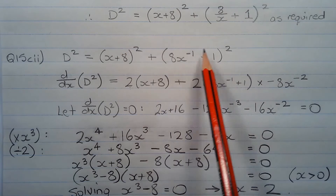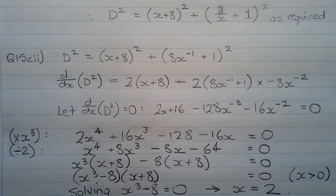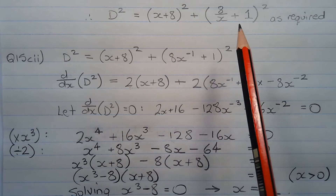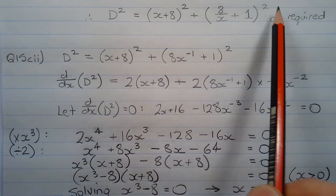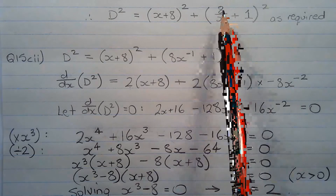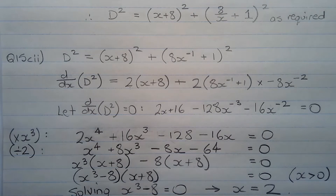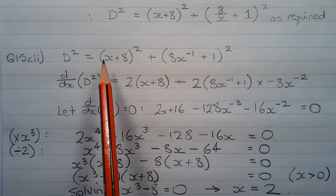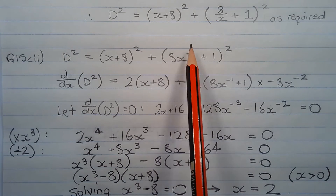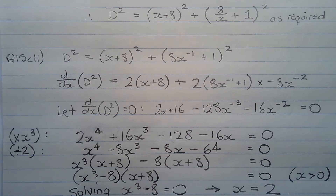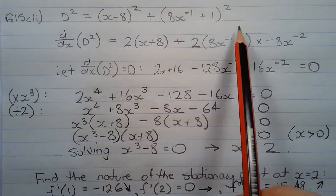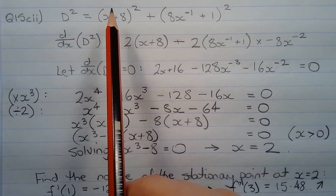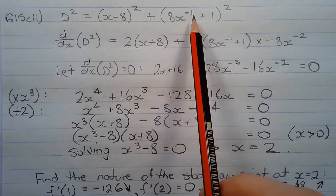We need to differentiate the right hand side with respect to x, let it equal 0, find the stationary point by solving for x, and then find the nature of that stationary point and show that it's a minimum. Before we do that, we need to express the right hand side using index notation. So 8 over x needs to be written as 8x to the power of negative 1. So d squared equals (x+8)² + (8x⁻¹ + 1)².